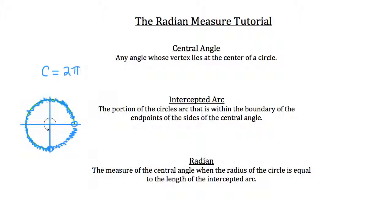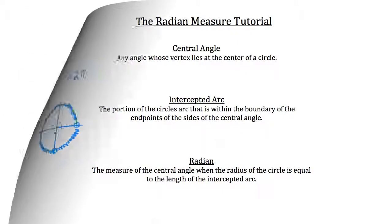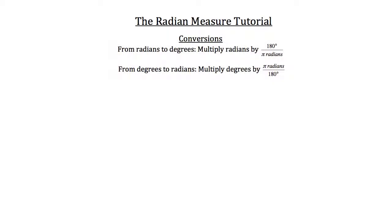Now I'll teach you the formula to convert from degrees to radians and vice versa. When converting from radians to degrees, we multiply radians by 180 degrees over π radians. And when converting from degrees to radians, we multiply degrees by π radians over 180 degrees.